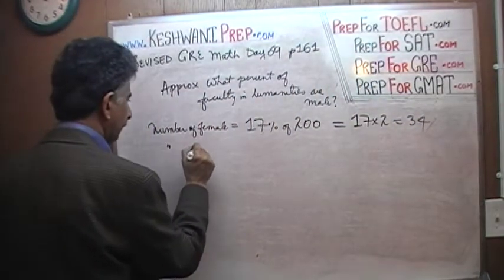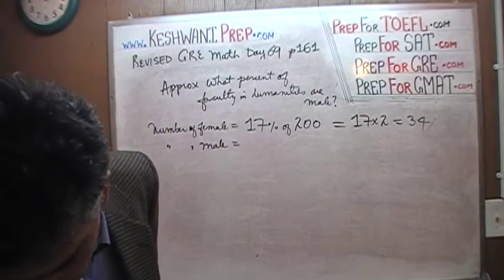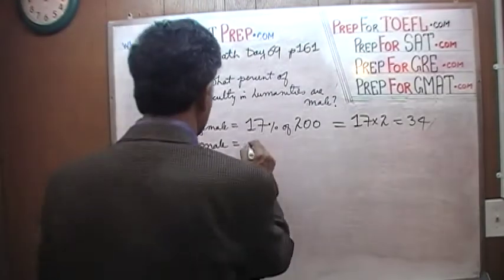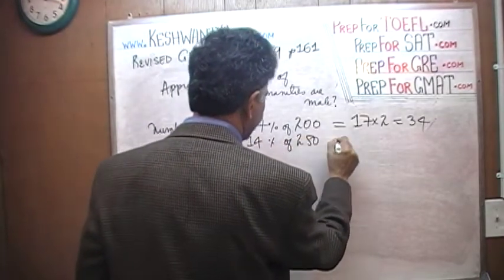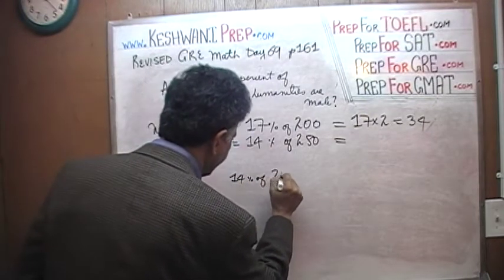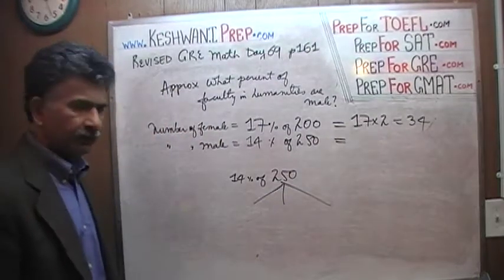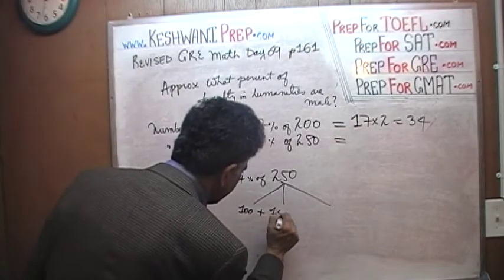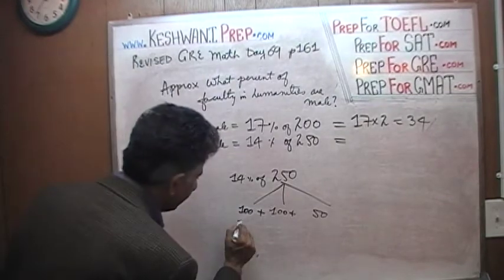The male, the number of male, let's see what percent of the male in the humanities. The male looks like 14%. Fourteen percent of 250. But how do we find fourteen percent of 250? Well, that's a tricky one. I don't like to use calculator unless I absolutely have to. So let's break up 250 into three parts, into 100 plus 100 plus 50.